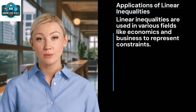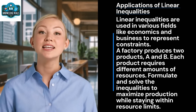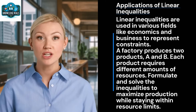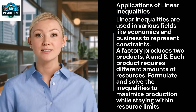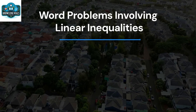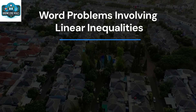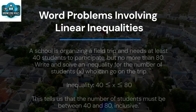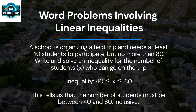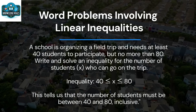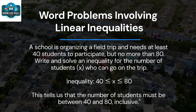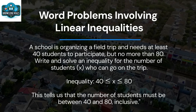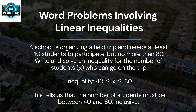Let's solve a practical example. A factory produces two products, A and B, each requiring different amounts of resources. Formulate and solve the inequalities to maximize production while staying within resource limits. Another example: a school is organizing a field trip and needs at least 40 students to participate, but no more than 80. The inequality is 40 ≤ x ≤ 80, telling us that the number of students must be between 40 and 80, inclusive.